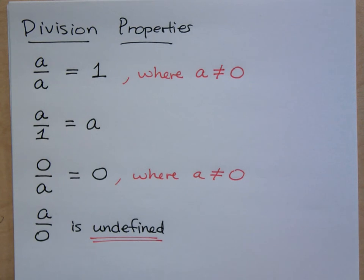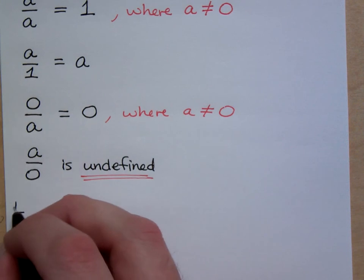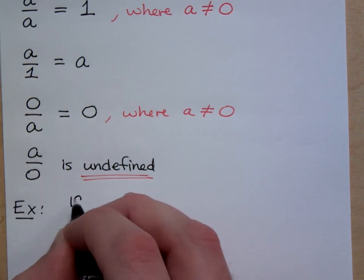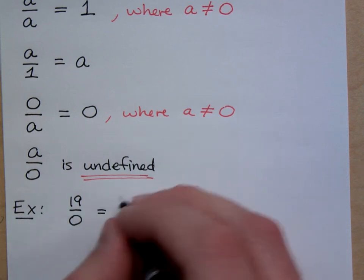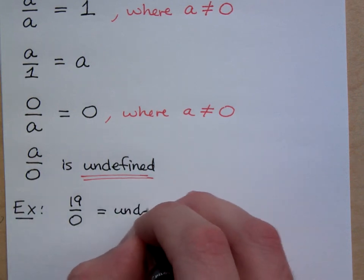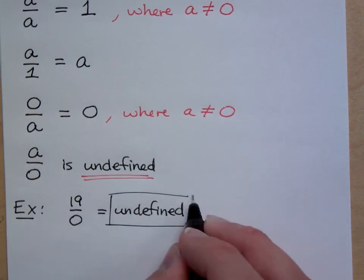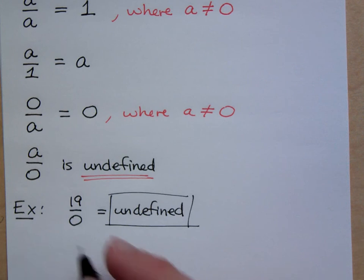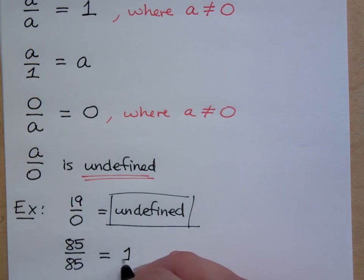So if I give you a question like that, you'll say, oh well, this is undefined. And let's see some examples of these guys in action. If I have 19 divided by zero, what do you say? You would actually write undefined. Okay, what if I were to say 85 divided by 85? You get one.